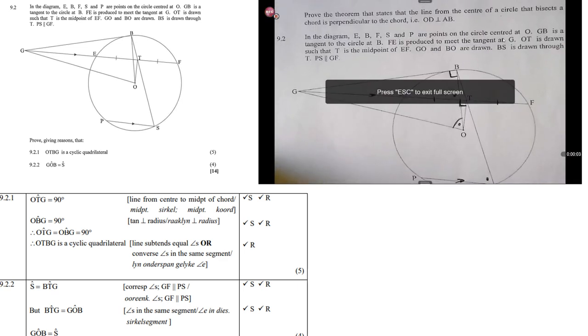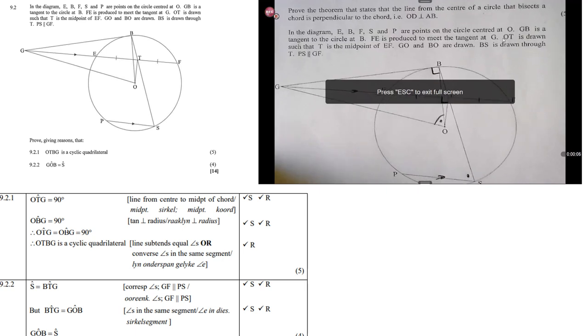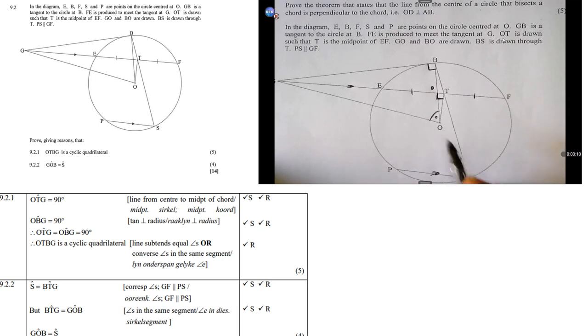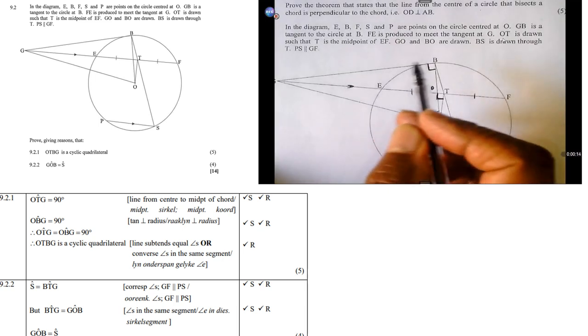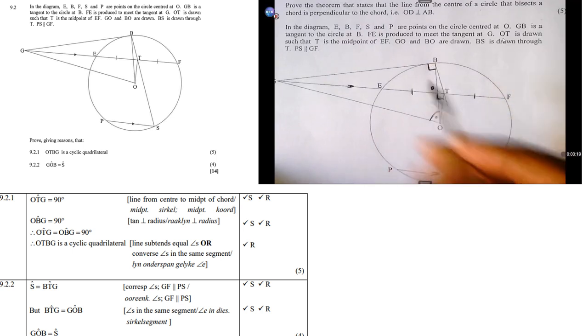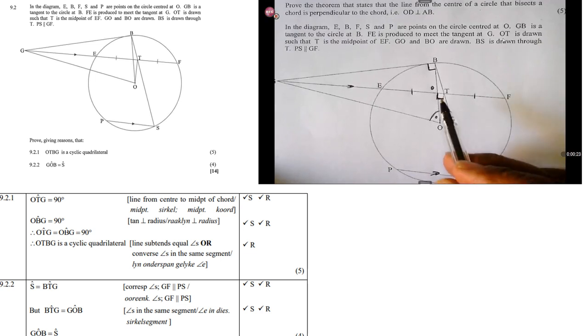Alright, question 9.2. In the diagram, EB, F, and S are points on the circle, the center O. GB is a tangent. So, GB is a tangent to the circle at B. EF is produced to meet tangent at G. Okay, so there you are. OT is drawn. So, T is the midpoint of EF.